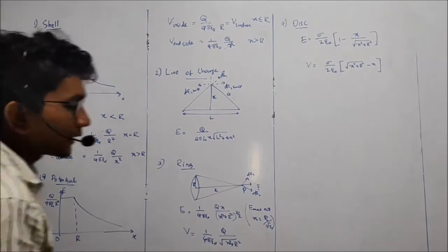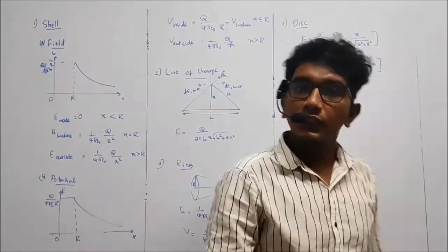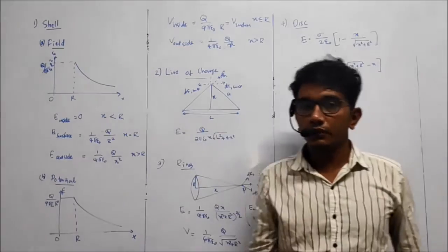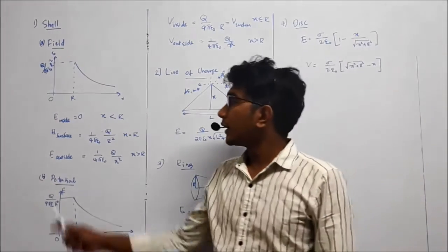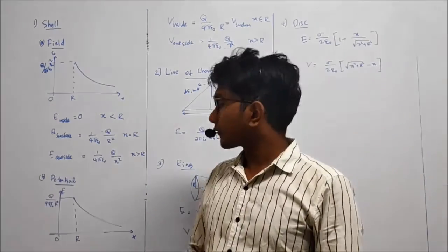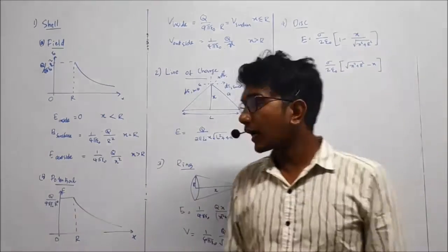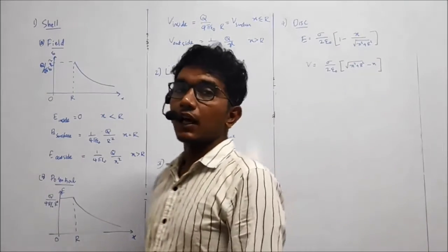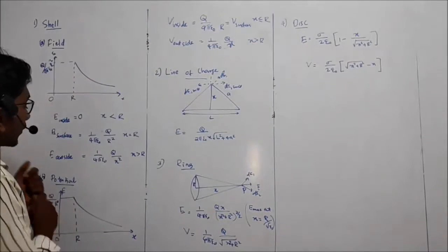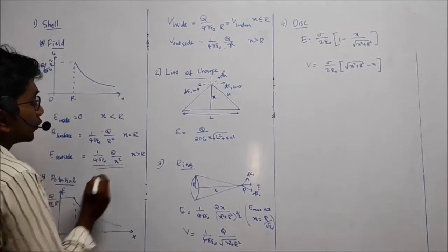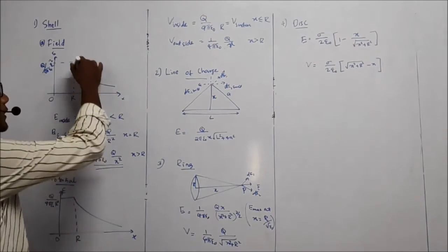So, in a shell, electric field inside, that is equal to 0. Inside an electric field's shell is equal to 0. So, we have learned that. And what about the surface? Surface will be 1 by 4 pi epsilon 0, q by r square. What about the outside? Outside electric field will be 1 by 4 pi epsilon 0, q by x square, when x is the distance.